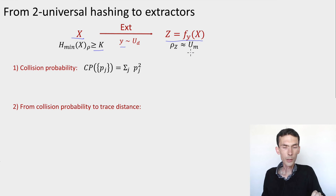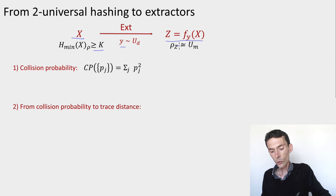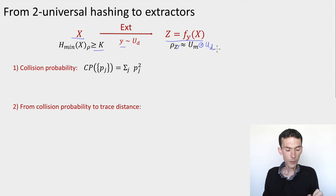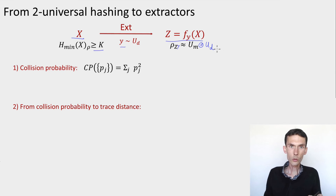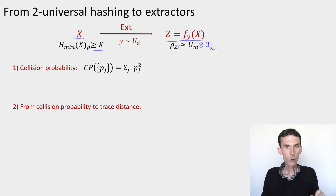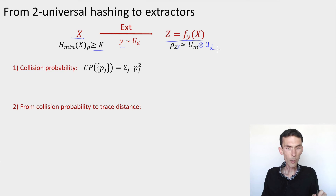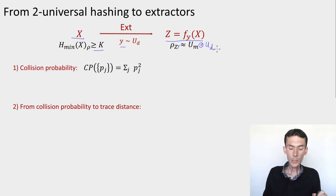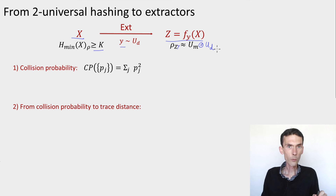More than this, we'd like to show that this is a strong extractor: that the joint distribution of output z and seed y is uniform over m plus d bits. We're going to do this in two steps. In the first step, we'll bound the collision probability of y and z. The collision probability of a distribution is the sum of the squares of its probabilities — intuitively, the lower the collision probability, the closer to uniform the distribution is. In the second step, we'll make that intuition formal by bounding the statistical distance between the output (z, y) and a uniformly distributed pair, as a function of the collision probability.